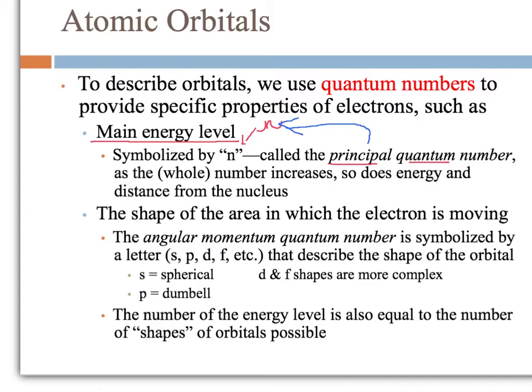The principal quantum number is always in whole numbers. You start at energy level one; energy level two has more energy; energy level three has even more. As you increase the energy level, you also get further and further from the nucleus. Think of the nucleus as the ground floor of a staircase — each step is one energy level. You're getting higher in energy and also further from that initial landing.